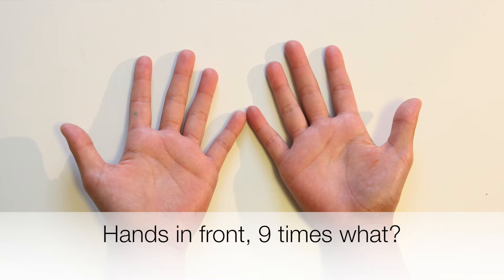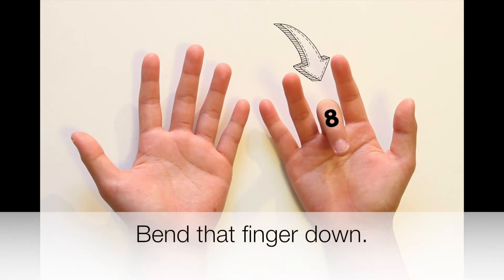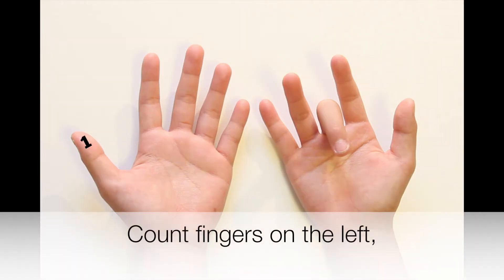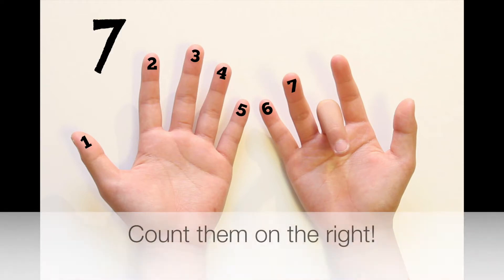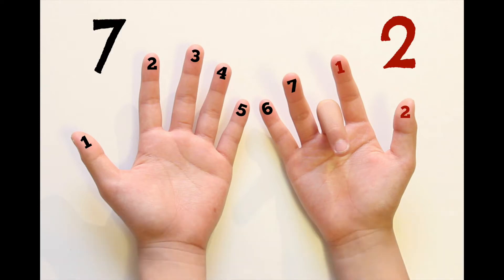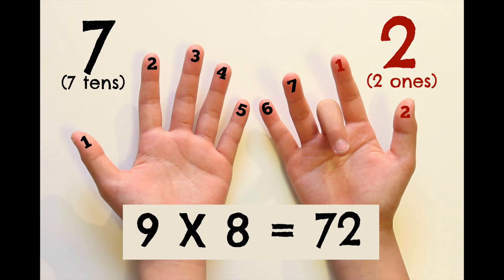Hands in front. 9 times what? 8. Bend that finger down. Count fingers on the left. 7. Count them on the right. 2. Yes, 72.